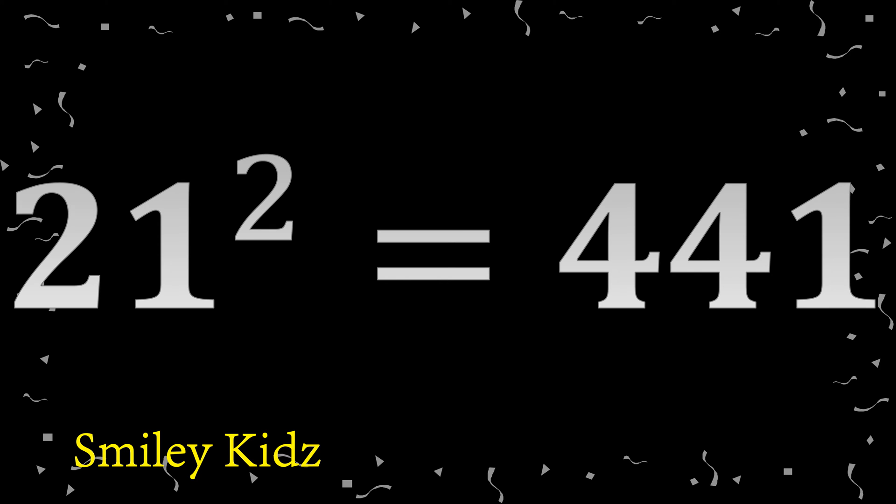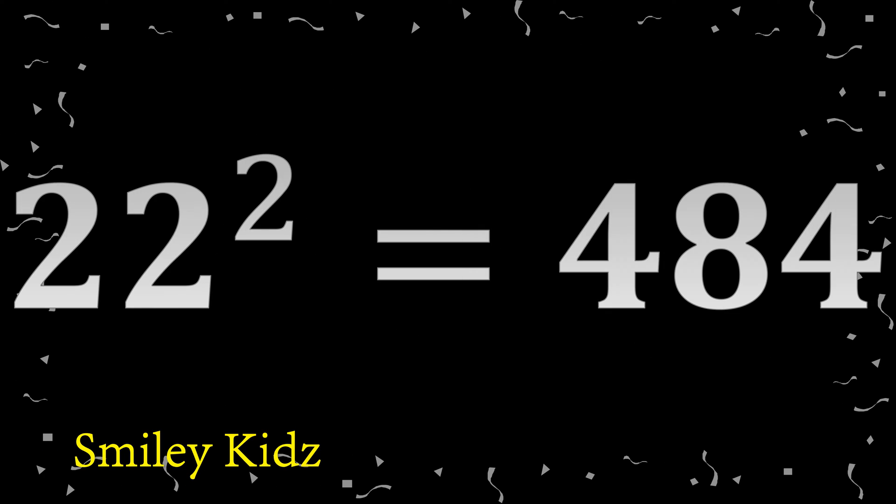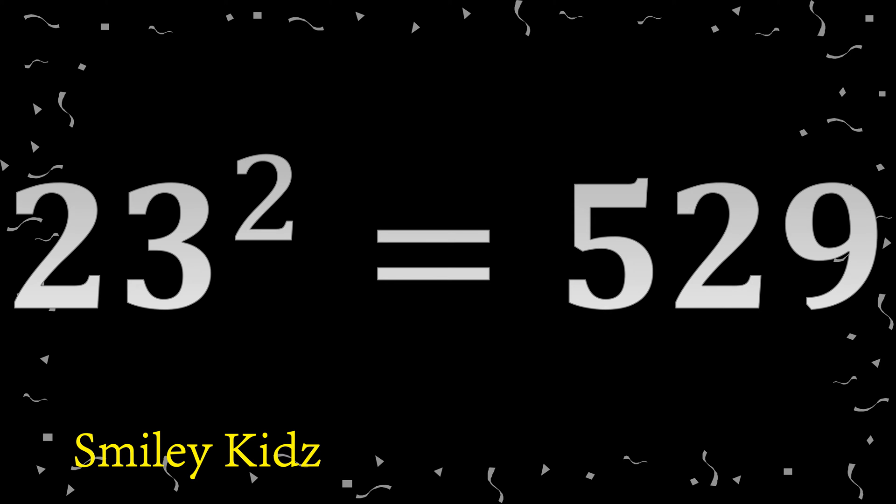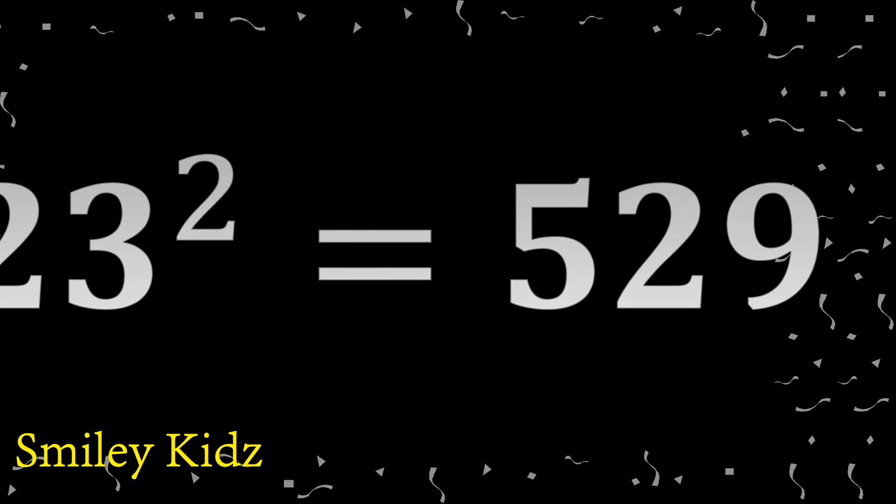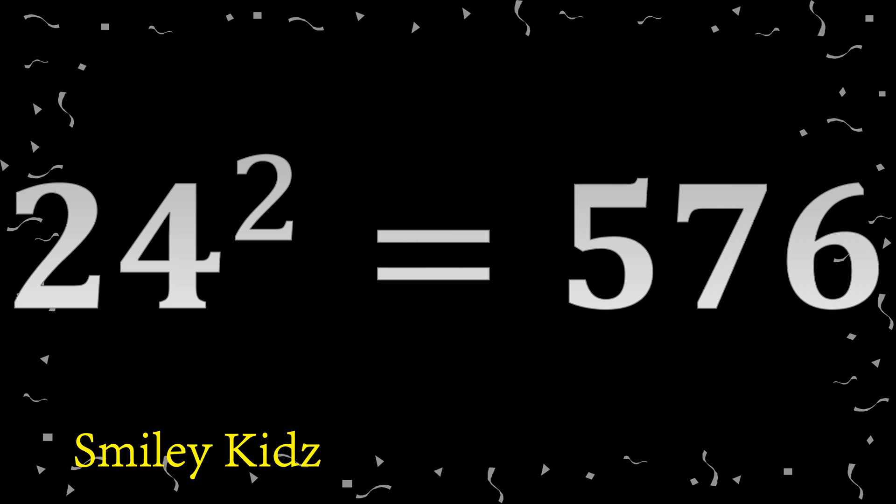Twenty-one square four hundred forty-one. Twenty-two square four hundred eighty-four. Twenty-three square five hundred twenty-nine. Twenty-four square five hundred seventy-six.